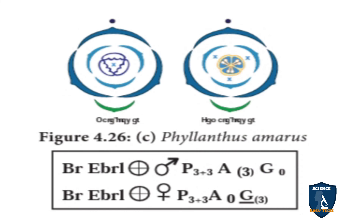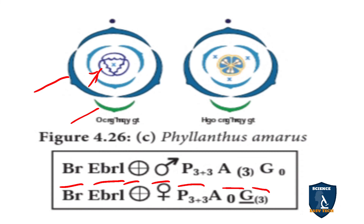For Phalanthus amara, both male and female flowers are shown. Bract present — BR; no bracteoles — EBRL; actinomorphic. Perianth three plus three — P(3+3). Male flower: androecium three, fused — A(3); gynoecium zero — G0. Female flower: androecium zero — A0; gynoecium three, superior — G(3).